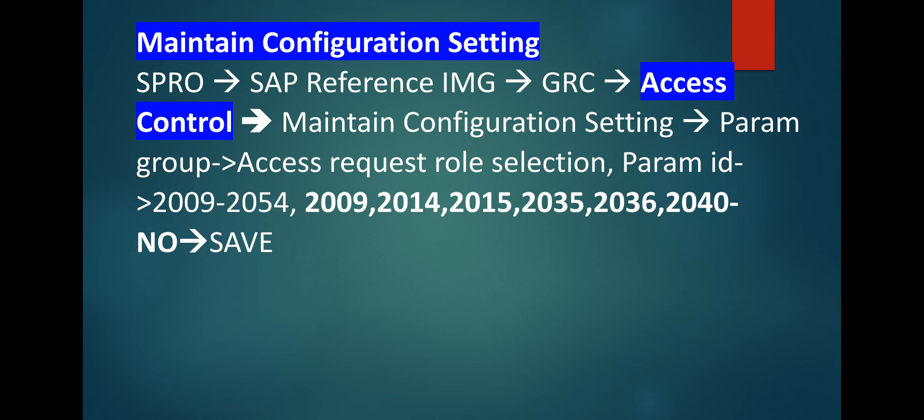Go to the access control in SPRO by the following link, and then for ARM, you are going to put the parameter IDs 2009 to 2054. For parameters 9, 14, 15, 35, 36, 40 — generally you can give 'No' and save.